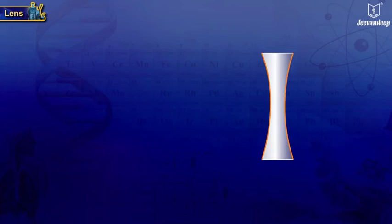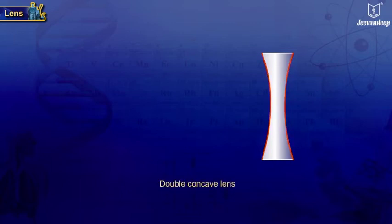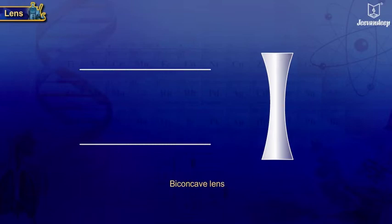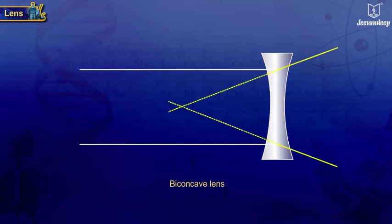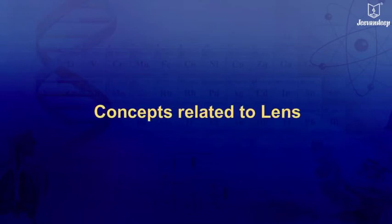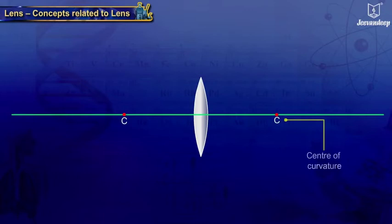A lens having both surfaces curved inwards is called a concave lens, a double concave lens, or a biconcave lens. It is thicker at the edges than at the middle. This lens can diverge light rays incident on it, so it is a diverging lens.